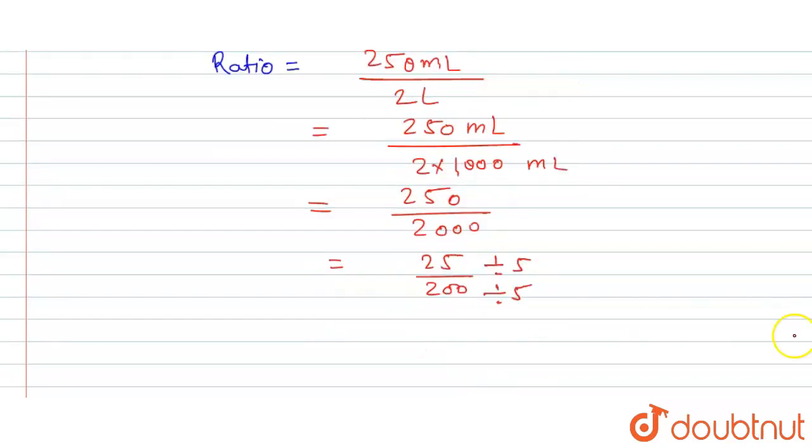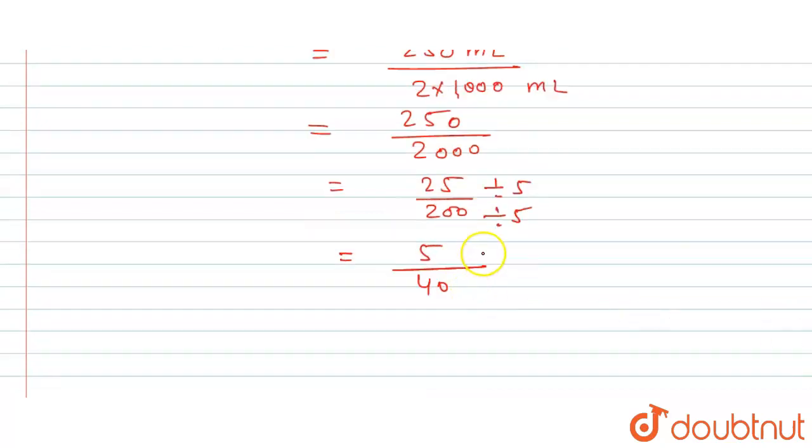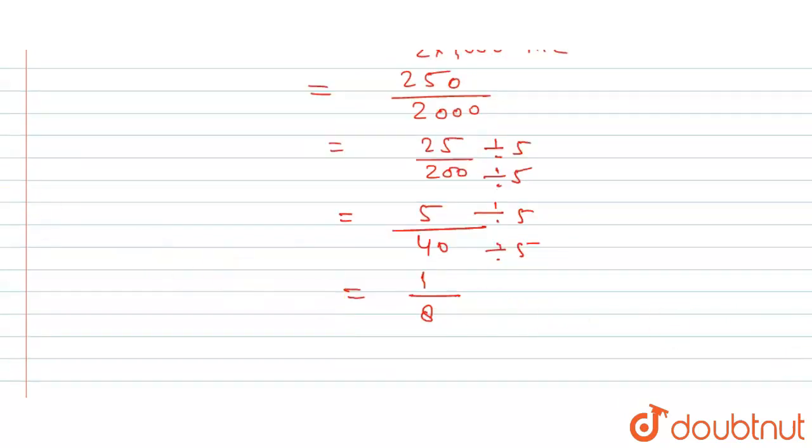In numerator and denominator, this is going to be equal to 5, and this is 40. Now again we will divide by 5, so this becomes 1 and this is 8. So 1 upon 8, or we can say the ratio is 1 to 8. This is the answer for this question. Thank you.